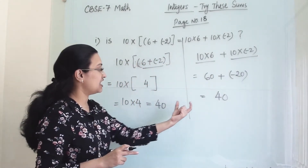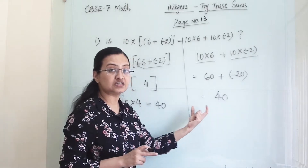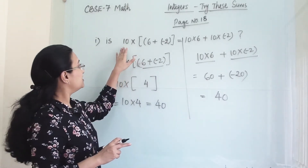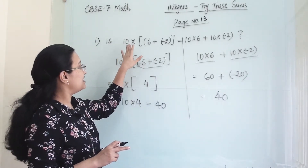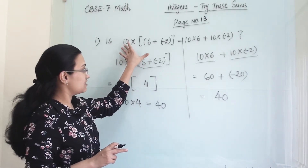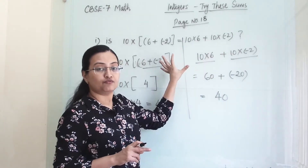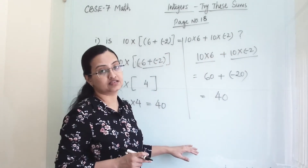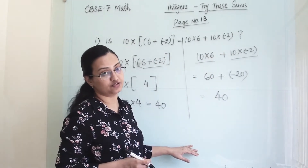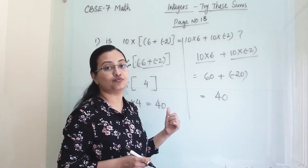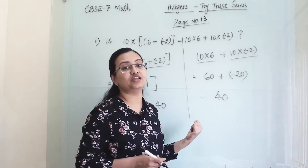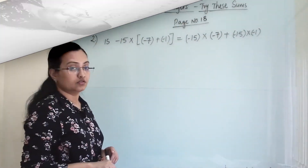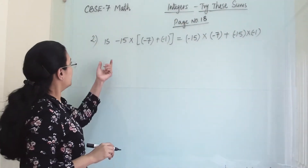The answer is the same. So whether we expand like this or like this, from both we get the same answer. This is one of the properties of multiplication of integers.